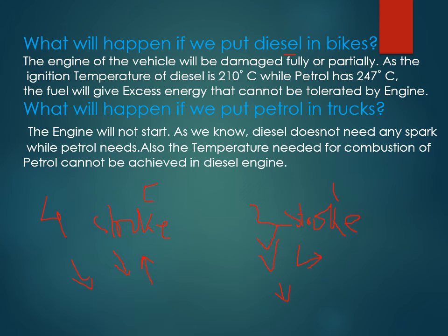What will happen if you put diesel in a bike? The engine will be damaged partially or fully. The ignition temperature of diesel is 210°C while petrol burns at 247°C, meaning the engine will experience heating earlier than it is designed to handle, causing damage. What will happen if you put petrol in a truck? The engine will not start, since diesel engines do not use a spark and petrol requires a spark to ignite. The engine will clog and shut down and will not start at all.